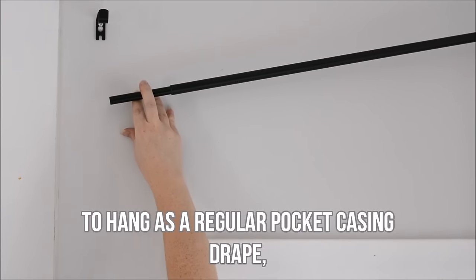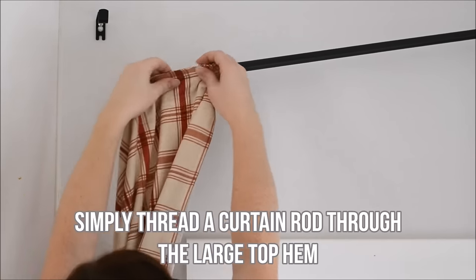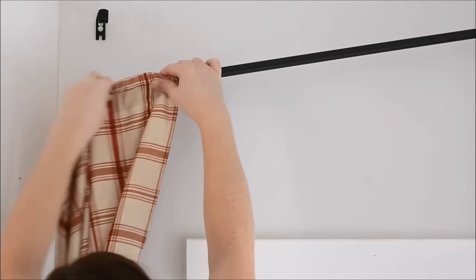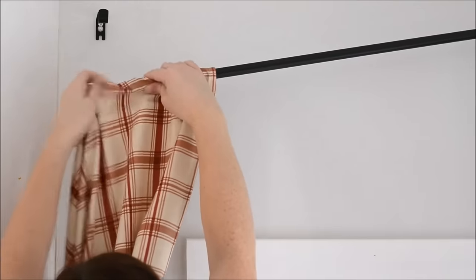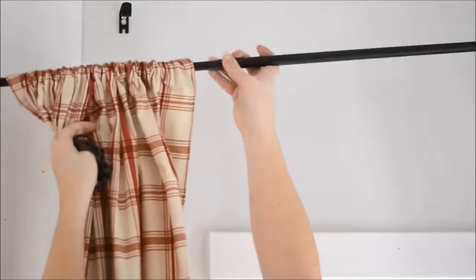To hang your drape as a regular pocket casing drape, simply thread a curtain rod through that large top hem. This creates a more casual look to your drape, so this is great in a country setting or just something a little more casual.